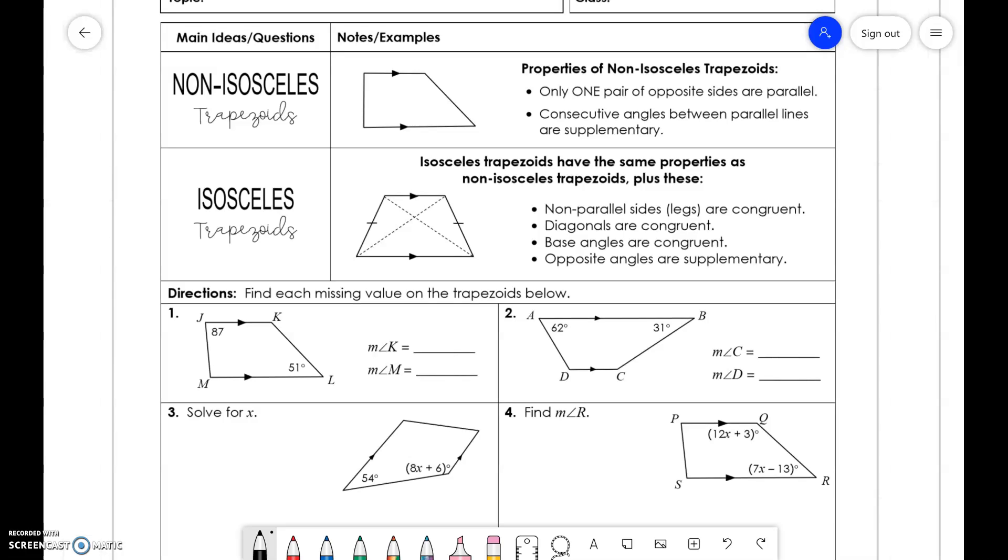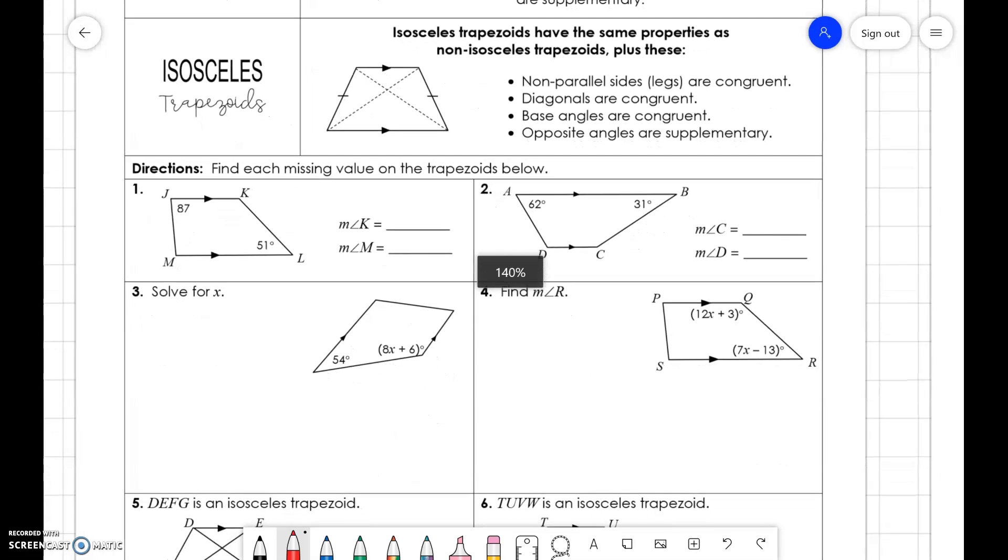Isosceles trapezoids have the same properties as non-isosceles, where they have one pair of opposite sides and those consecutive angles are supplementary, but they also have non-parallel side legs that are congruent. So, if you can see here, this line and this line are congruent to each other. Diagonals are congruent, base angles are congruent, and opposite angles are supplementary. Those are just some things that we need to remember when we're doing these problems.